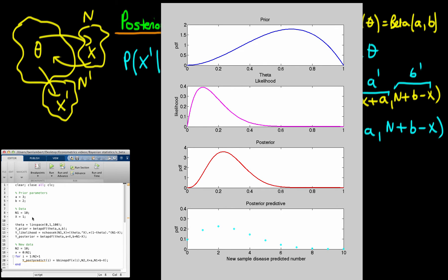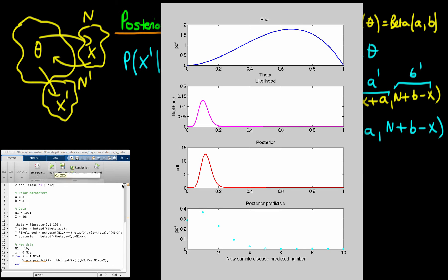As we increase the sample size in our original sample while keeping the same proportion of individuals having the disease, the posterior is now much closer to the likelihood, because the prior receives less weight in the posterior density. The posterior predictive distribution still exactly mirrors what we see in the posterior distribution.